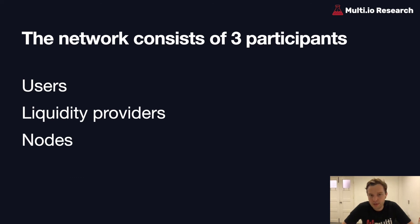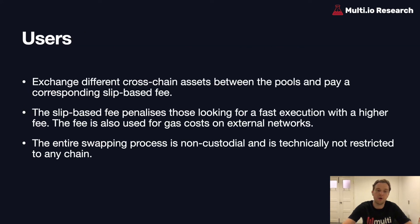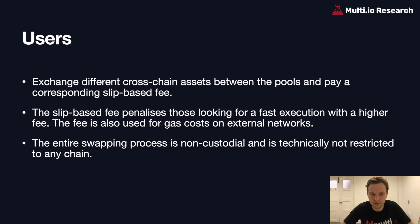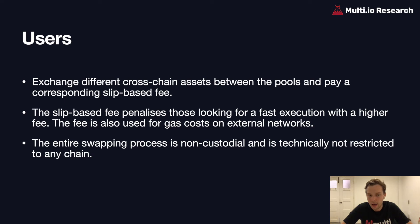ThorChain's network consists of three participants: users, liquidity providers, and nodes. Users exchange different cross-chain assets between the pools and pay a corresponding slip-based fee. The slip-based fee penalizes those looking for fast execution with a higher fee, and the fee is also used to cover gas costs on external networks for the nodes. The entire swapping process is non-custodial, permissionless, and technically not restricted to any chain.